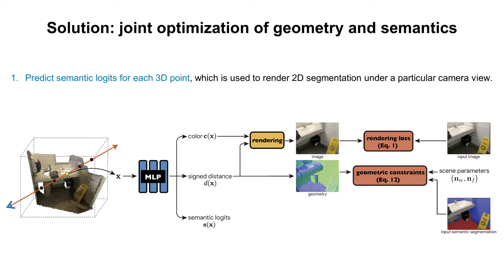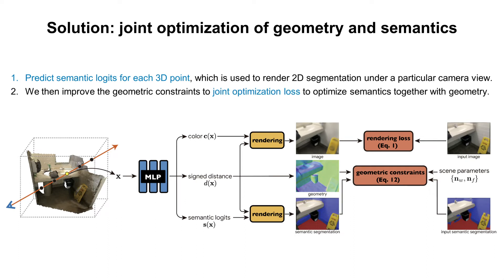we augment the neural scene representation by additionally predicting semantic logits for each point in 3D space, which is used to render 2D segmentation under a particular camera view. We then improve the geometric constraints to joint optimization loss to optimize semantics together with geometry.